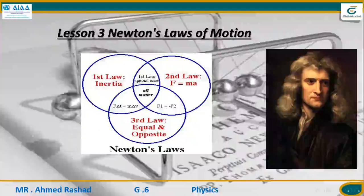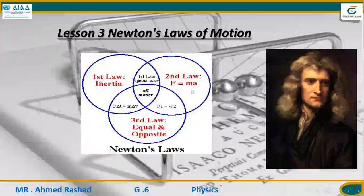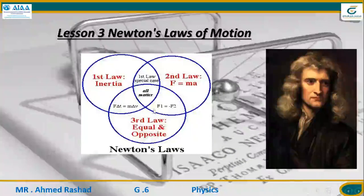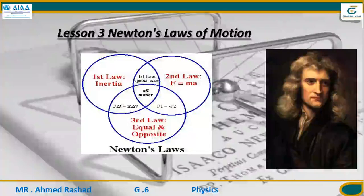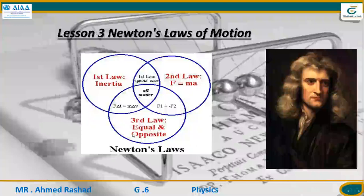Law number 1 talks about inertia. Number 2 talks about any force given to an object that makes acceleration for that object. Number 3 is about opposite forces acting together that are equal in strength and opposite in direction.